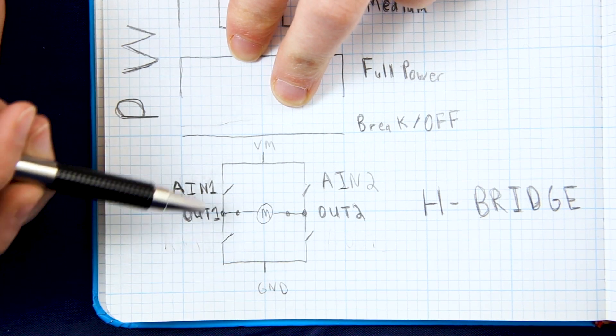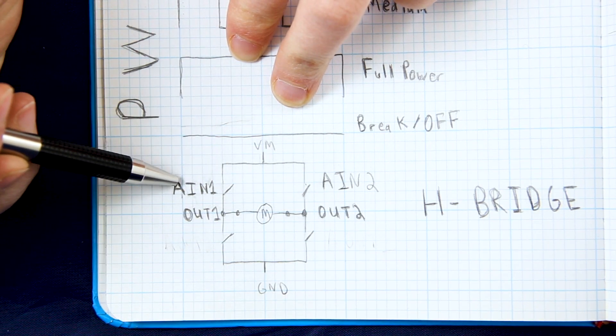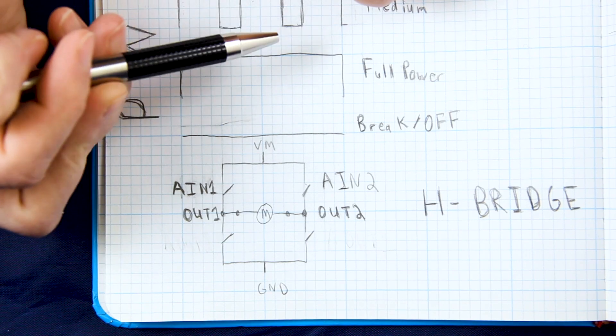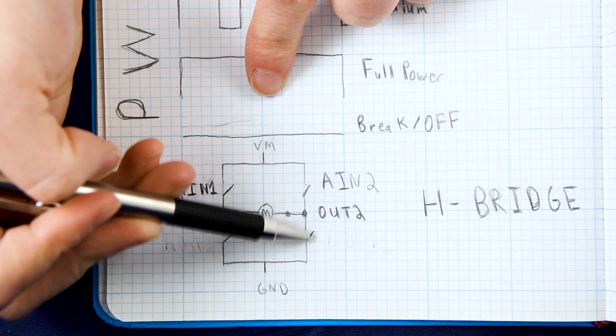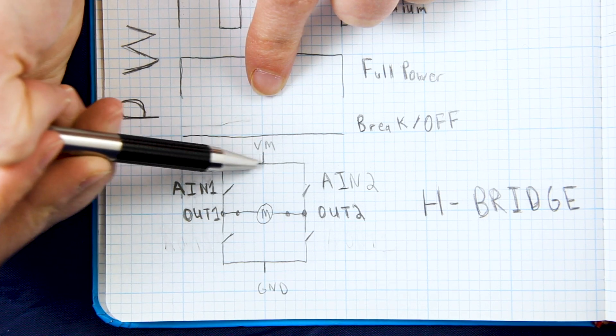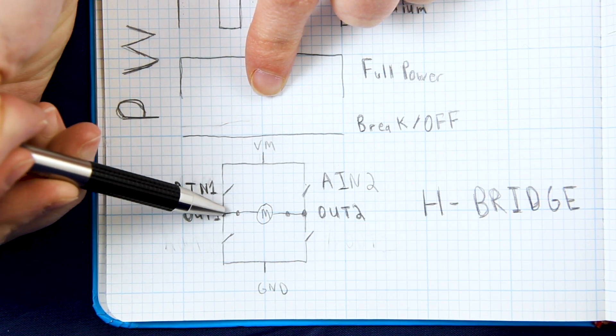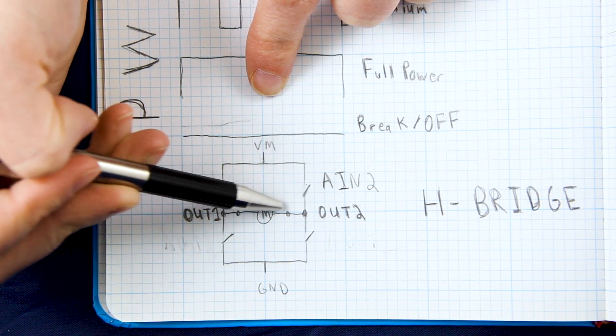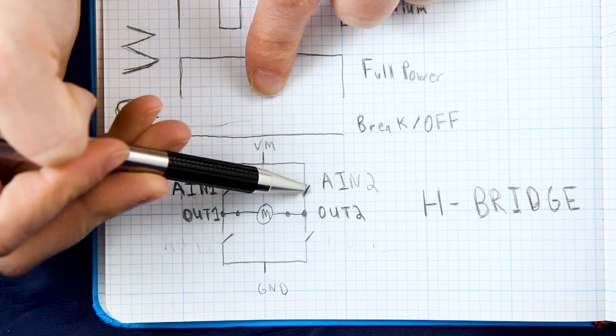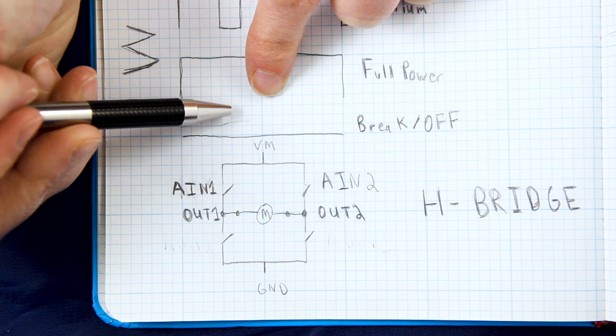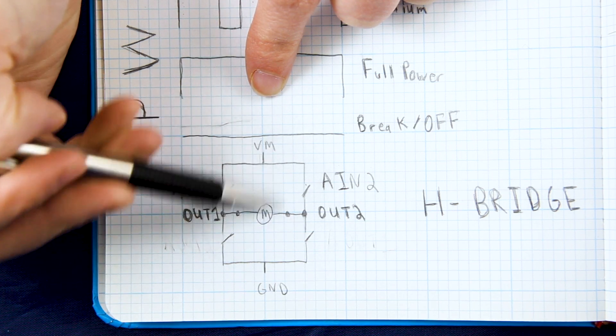So we have to close some parts of this and if we closed A in 1 which was one of our inputs we had up in our chip, if we close this switch this one will also close. So the voltage will come in here, it will go down this path, it will go across the motor in this direction and then down and out through ground because we've completed our circuit.